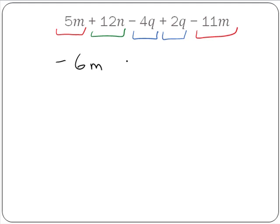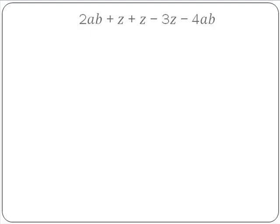We have just 1N term, so 12N. And we have 2Q terms. So minus 4Q plus 2Q will give us minus 2Q. That's our final answer. And our last example then.